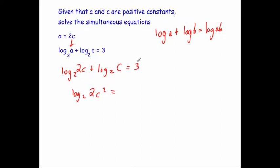We need the right side to also be log₂ of something. Since log₂(something) = 3, we know that 2³ = 8, so log₂(8) = 3. Therefore, log₂(2c²) = log₂(8).